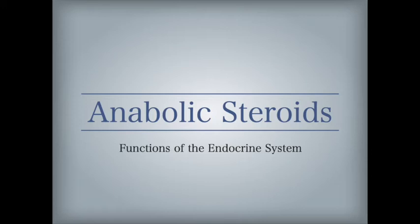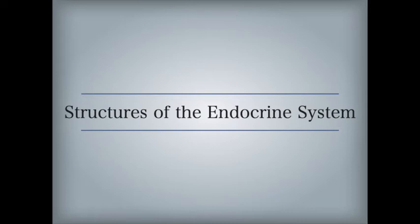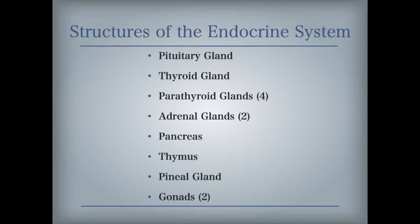Serious side effects of anabolic steroid use include liver damage, altered body chemistry, testicular shrinkage, and breast development in males, plus unpredictable mood swings and violence. Steroid use by teenagers also stops long bone development, resulting in shortened stature. The major glands of the endocrine system are: 1 pituitary gland divided into 2 lobes, 1 thyroid gland, 4 parathyroid glands, 2 adrenal glands, 1 pancreas including the pancreatic islets, 1 thymus, 1 pineal gland, and 2 gonads — ovaries in females and testes in males.